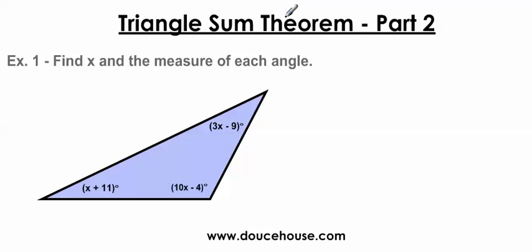Remember on the first one, the triangle sum theorem is all the angles inside of a triangle are always going to equal 180 degrees. Well, this one is taking a different spin on it. On this problem, this is the only problem I have. It says find x and the measure of each angle.